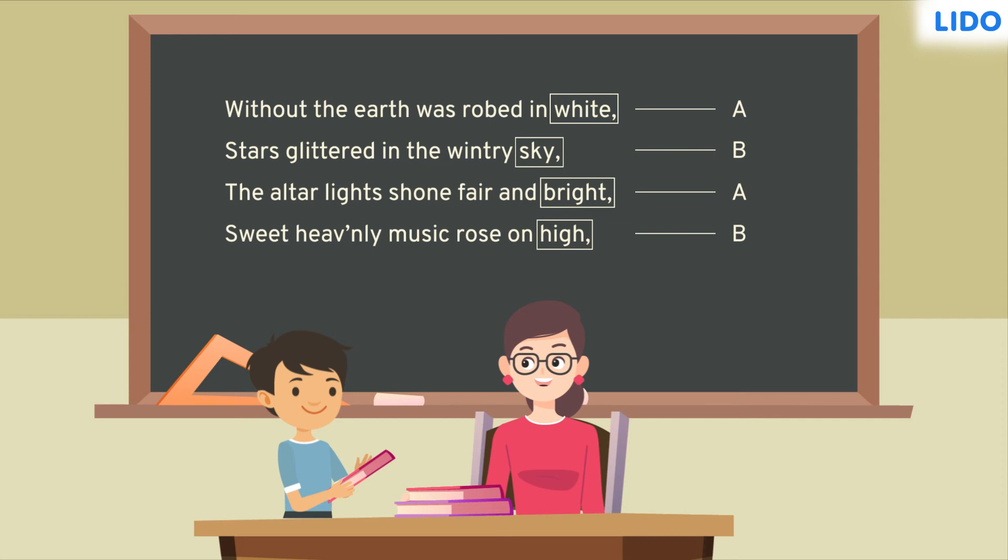Step 4. A pattern is spotted. The pattern here is A-B-A-B. The rhyme scheme of this poem is therefore A-B-A-B.